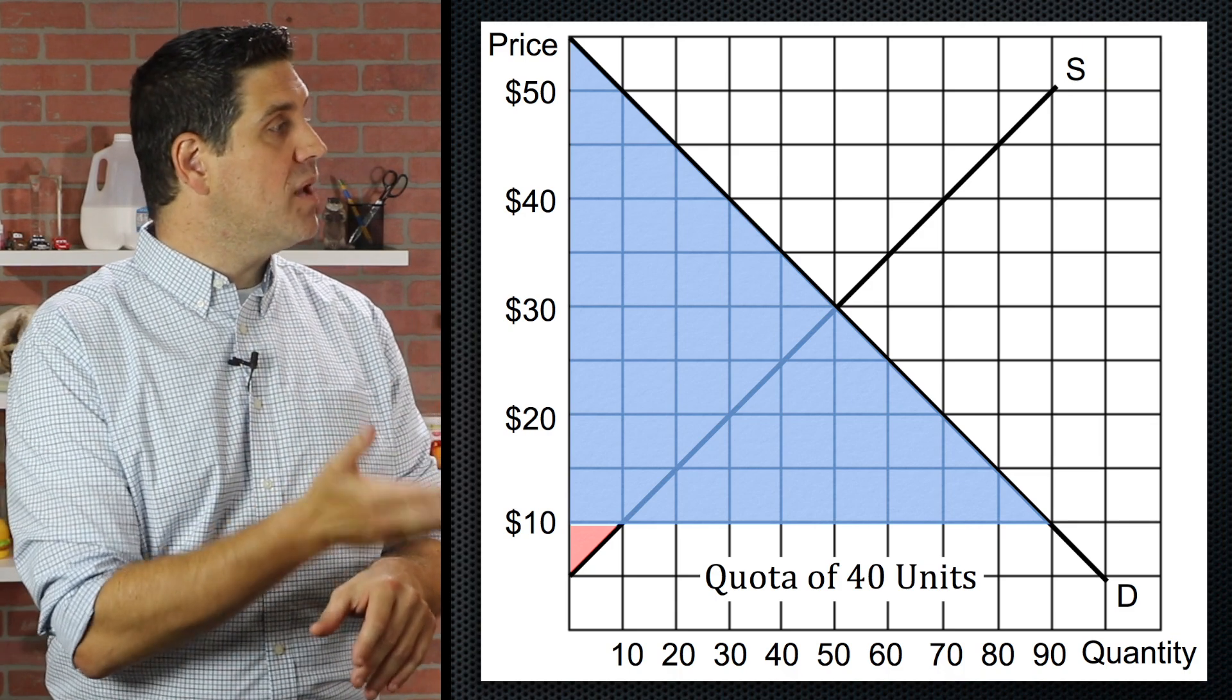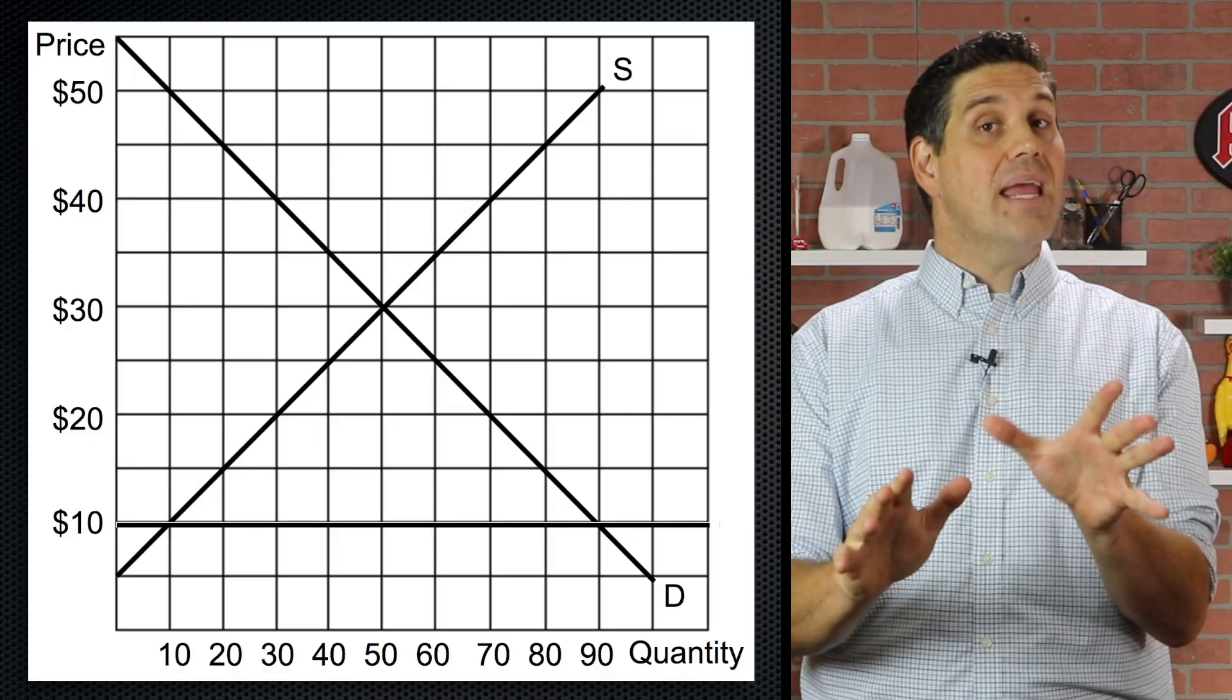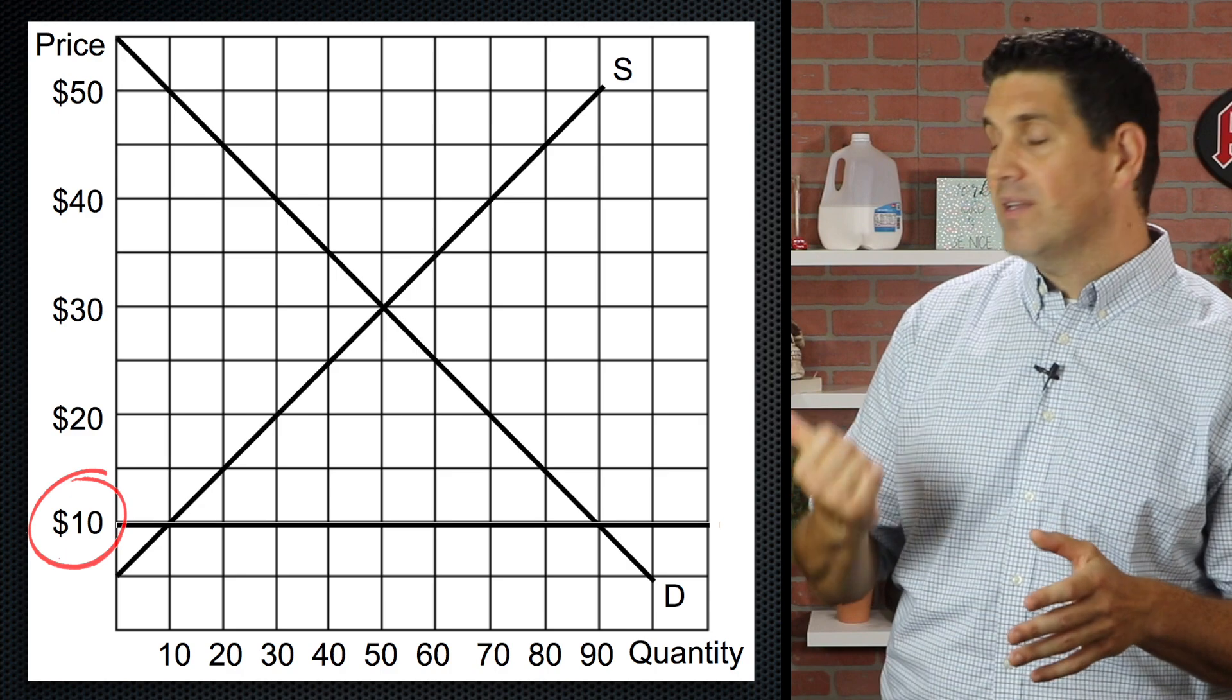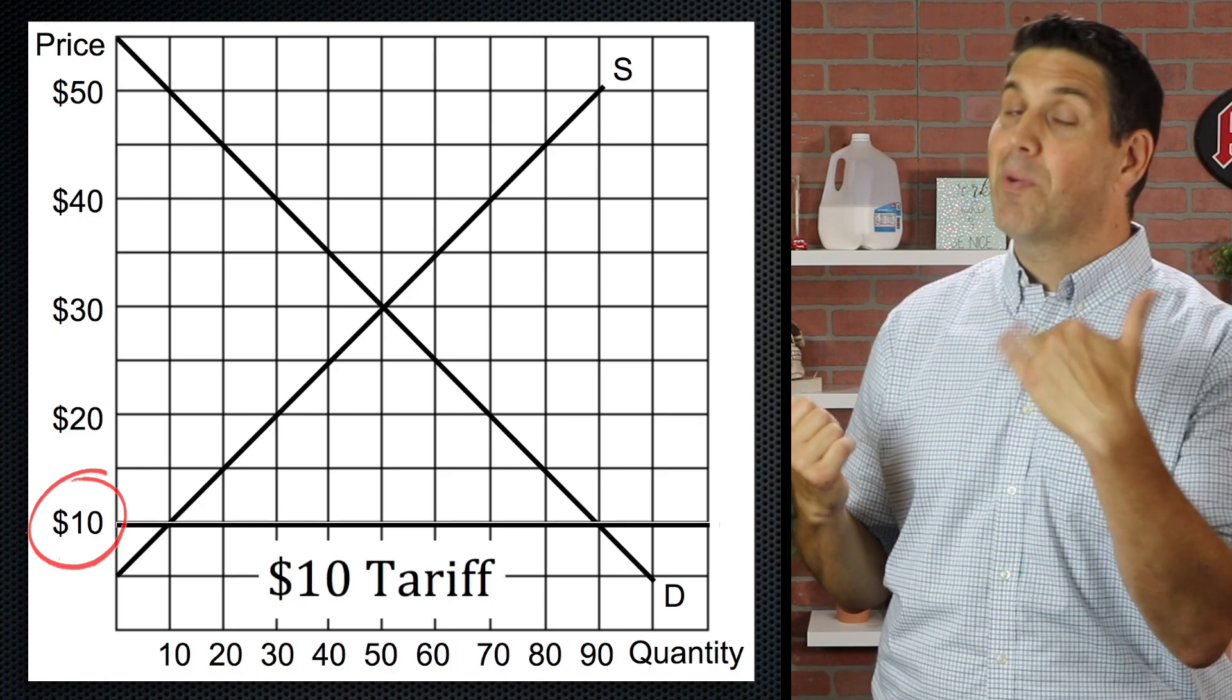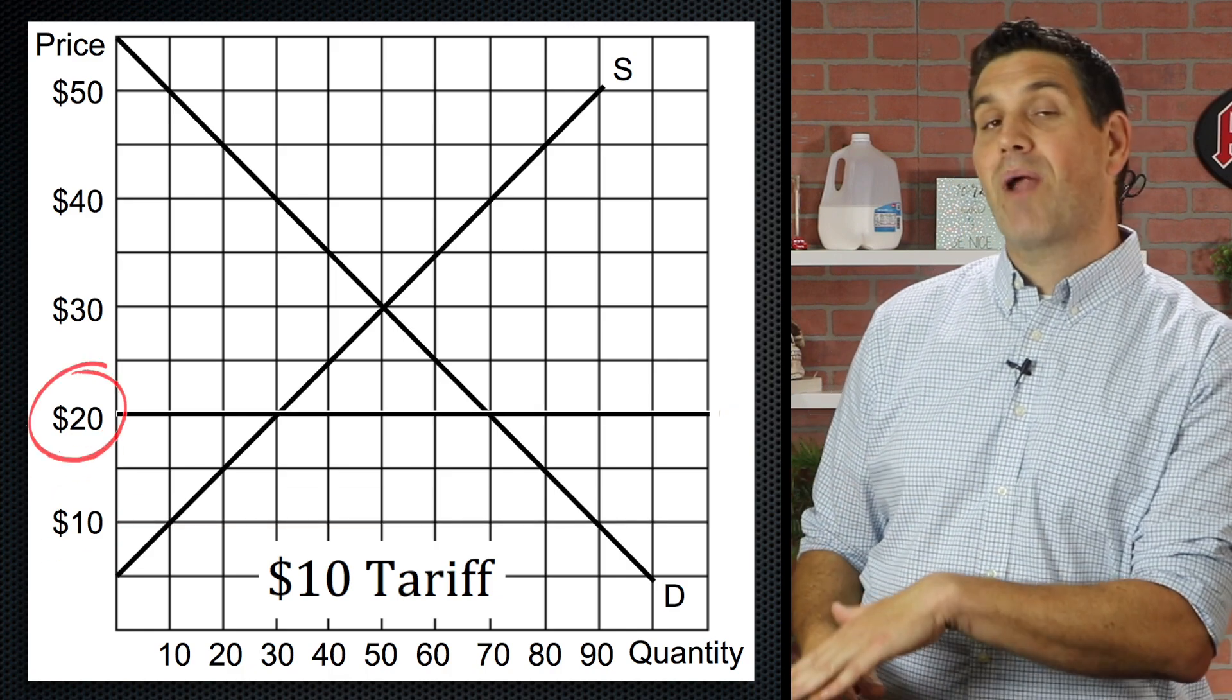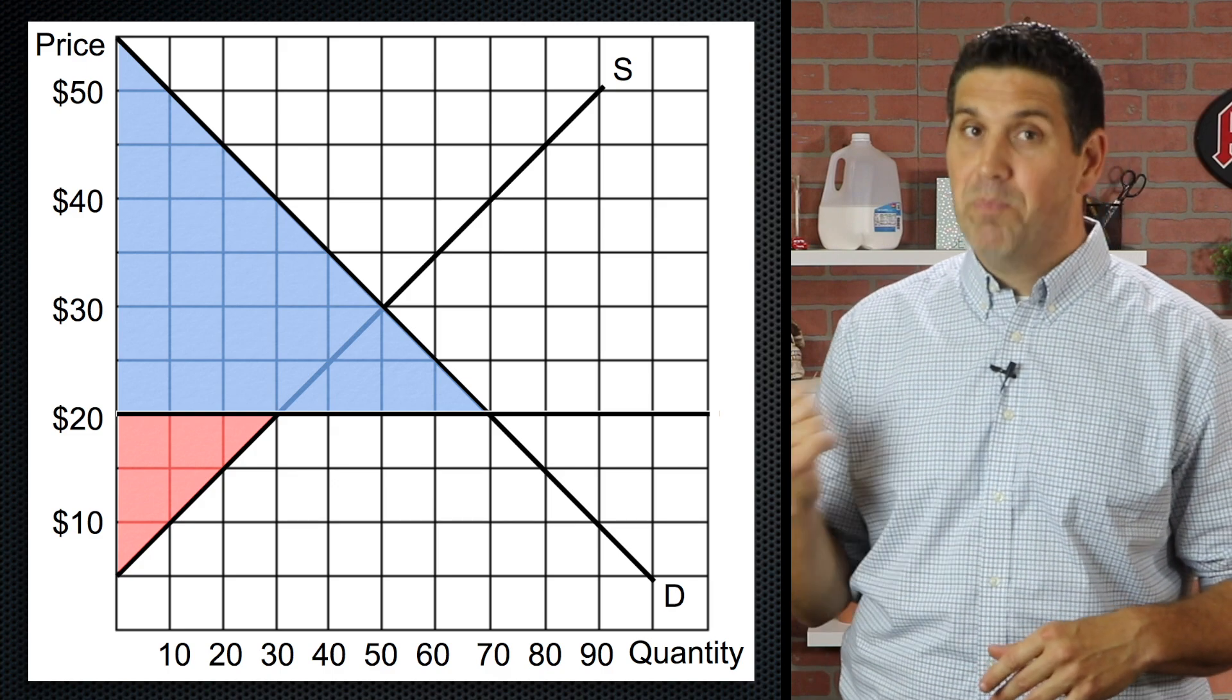In that case, consumer surplus would get a little bit smaller and domestic producer surplus would get a little bit bigger. And the same thing happens when there's a tariff. If the international price was back here at $10 and the government says, listen, we're going to put a $10 tariff on every single unit you import, that's going to change the price to 20. Again, like a quota, consumer surplus gets smaller and producer surplus gets bigger.